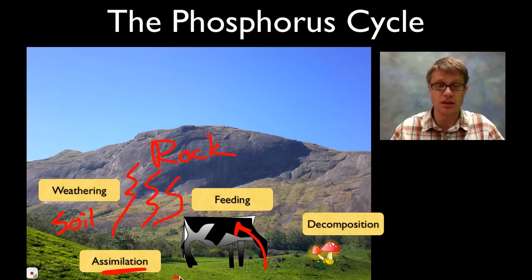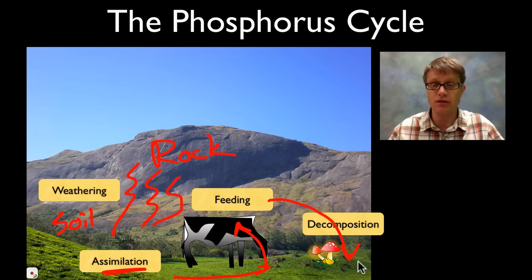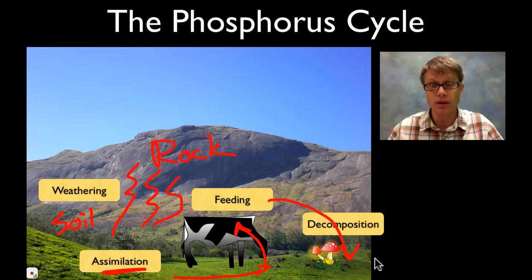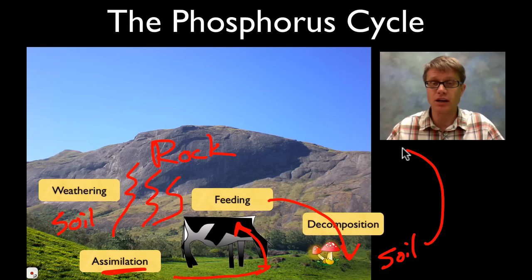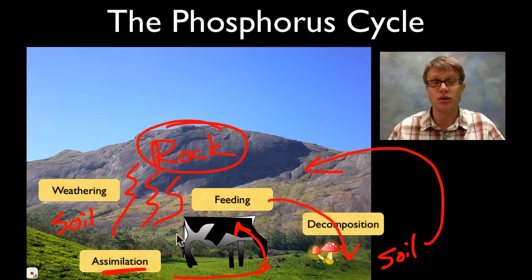How do we return it to the soil? Well as we die and we decompose, that phosphorus is going to be returned to the soil. And then that soil eventually is going to become rock again through the rock cycle. And so we can return it to the rock, and so it can be recycled over and over and over again.